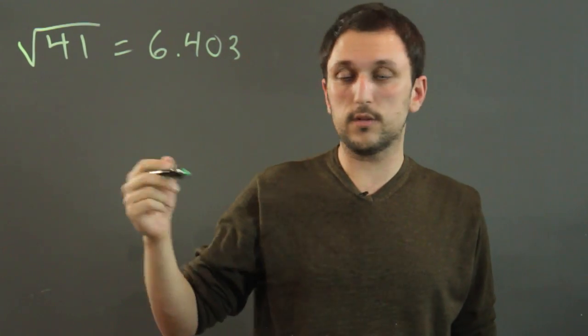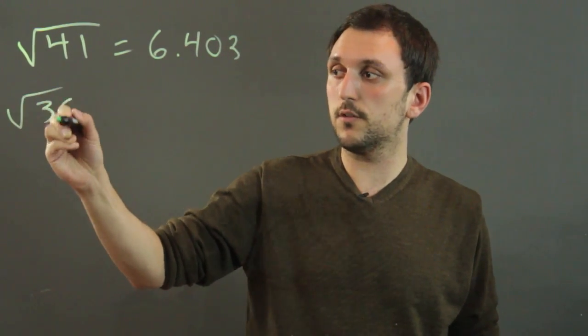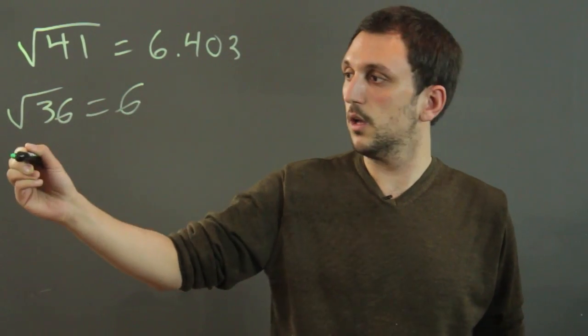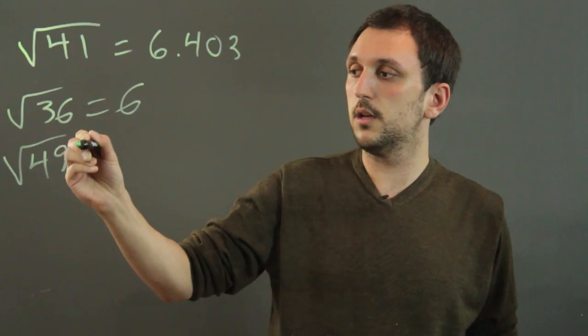Basically, perfect squares like the square root of 36 equals 6, and the square root of 49 equals 7.